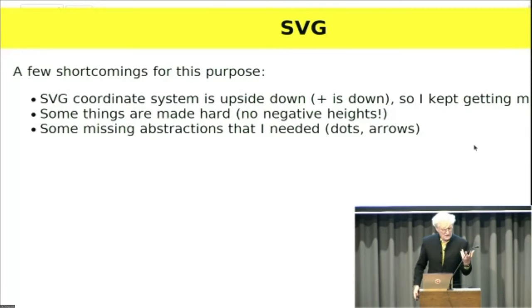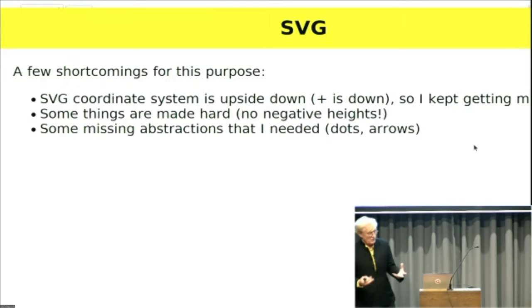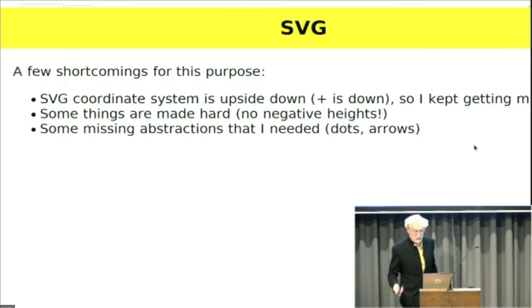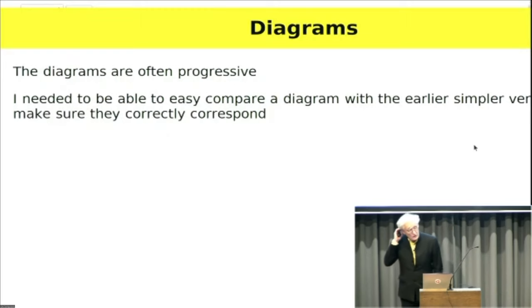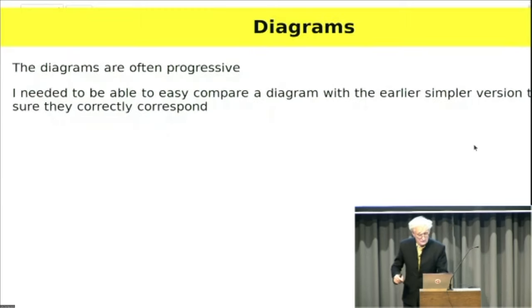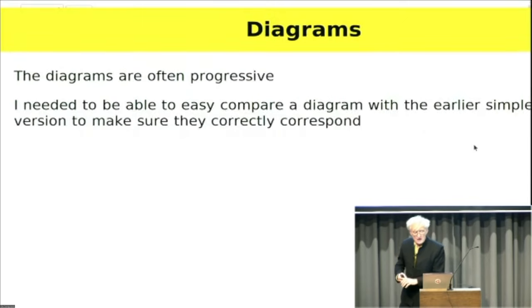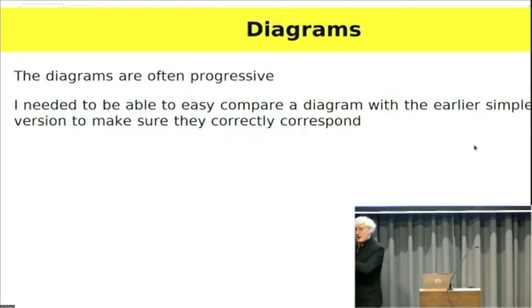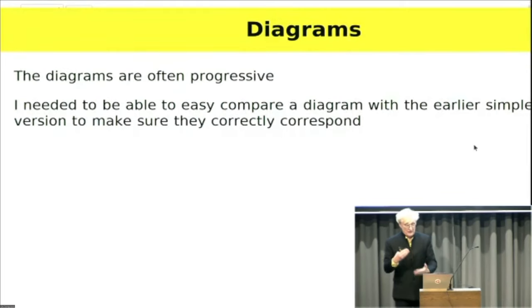There are some abstractions I needed, like dots and arrows, which you can build but are basic abstractions I required. Also, my diagrams are often progressive — one diagram is a later version of an earlier one — and I wanted to make sure they corresponded so I could easily compare them.